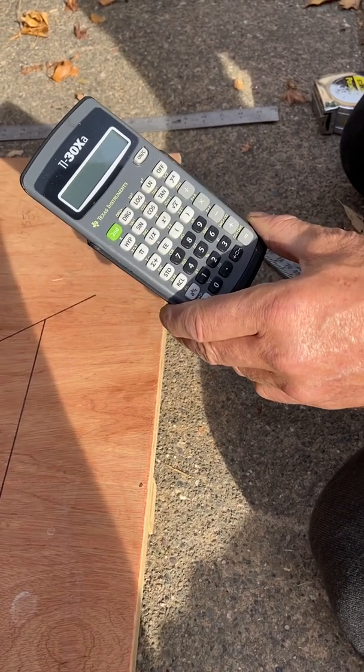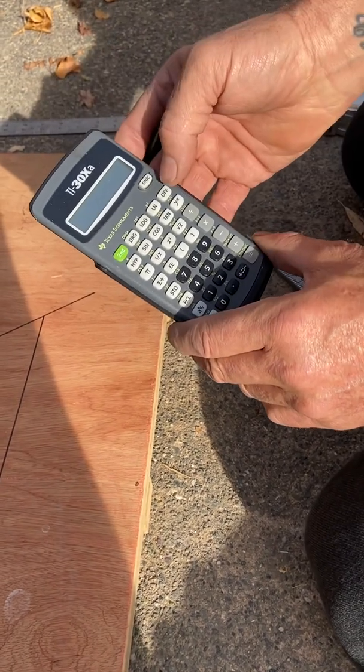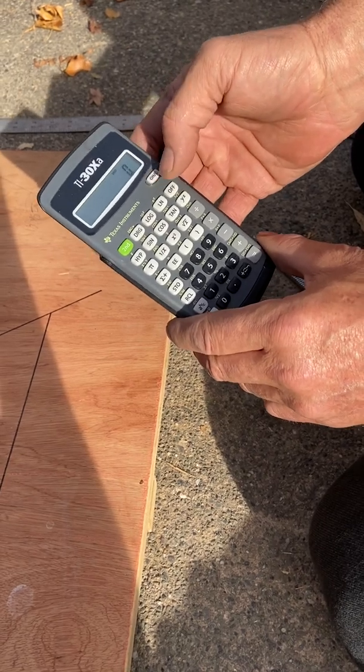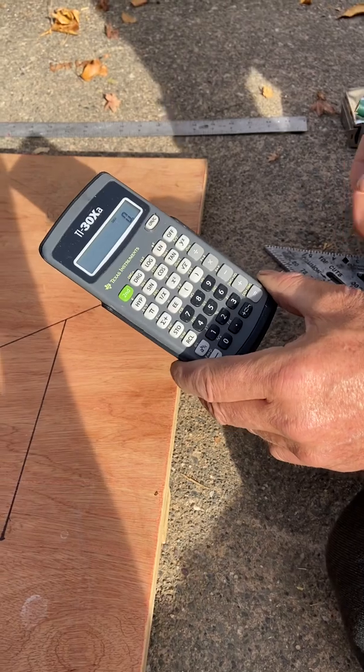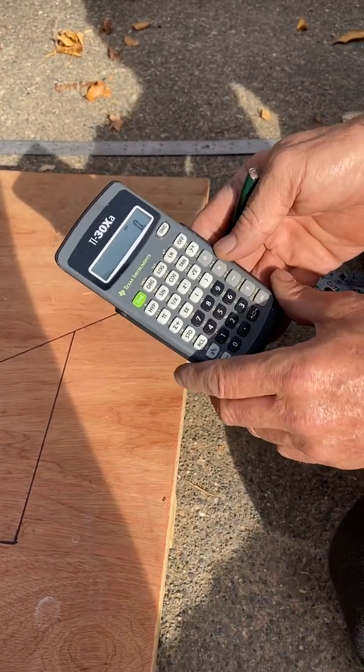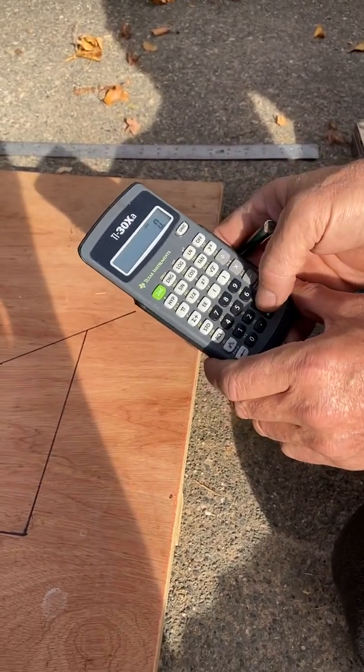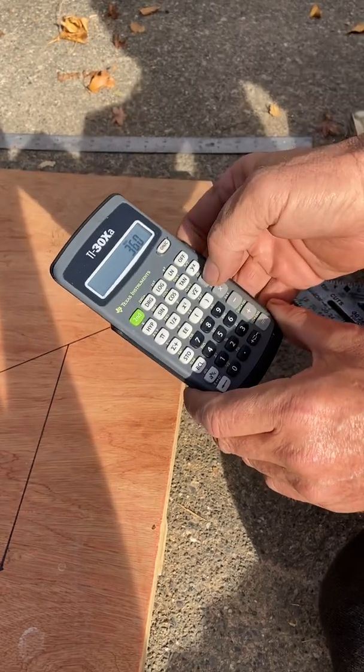This is a TI-30XA, a ten dollar trig calculator. It has a tangent function which is nifty. So we'll take any polygon - in your case it's a hexagon - 360 degrees divided by...